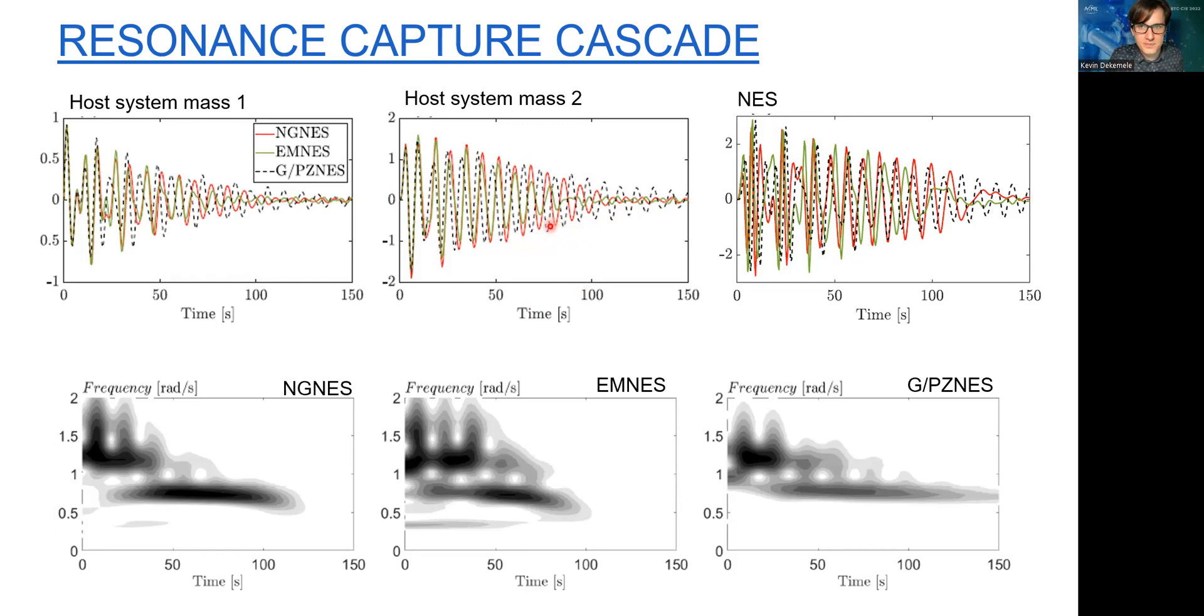Yet the piezoelectric and grounded NES fail—well, they don't fail, but they are much slower. This behavior is reflected in the vibrations of the NES itself, where the green one stops first, then the red, then the black. If I do a wavelet transform of the non-grounded NES, let's compare them. The electromagnetic NES is the fastest, stops around 100, while the non-grounded continues a bit. The grounded piezoelectric goes beyond what the end here shows, so it is by far the slowest.